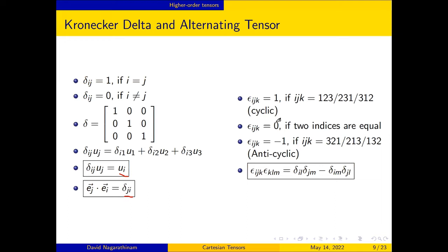There is another important concept called the alternating tensor, epsilon_ijk, which is a third order tensor with 3 cubed elements. Epsilon_ijk can take three possible values: if ijk is cyclic, epsilon_ijk equals 1; if any two indices are equal, epsilon_ijk equals 0; if the indices are anticyclic, epsilon_ijk equals negative 1. A common relation between the Kronecker delta and the alternating tensor is shown by the equation in the box.